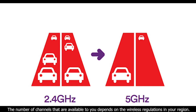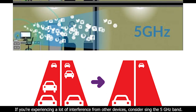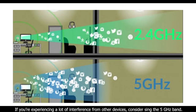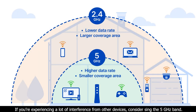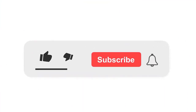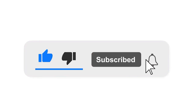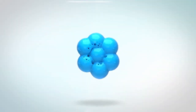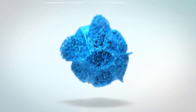The 5 gigahertz band has 23 channels to use while the 2.4 gigahertz band has only 11 channels. The number of channels available to you depends on the wireless regulations in your region. If you are experiencing a lot of interference from other devices, consider using the 5 gigahertz band.